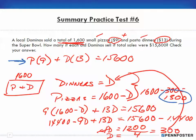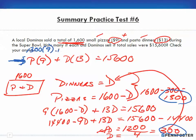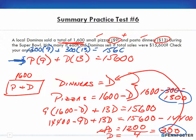So we have 1300 pizzas and 300 dinners. Let's verify: 1300 times $9 plus 300 times $13 should equal $15,600.